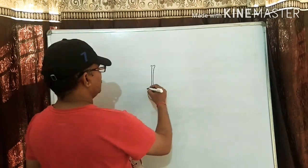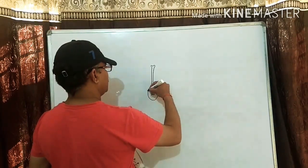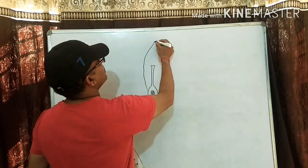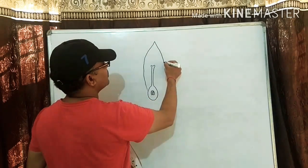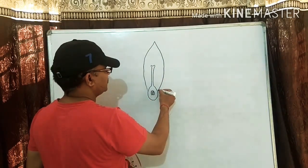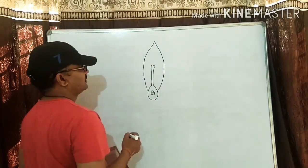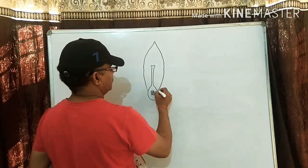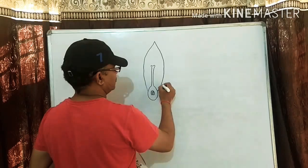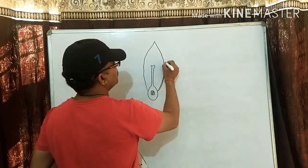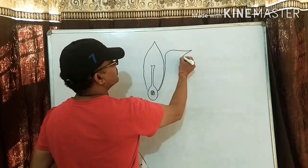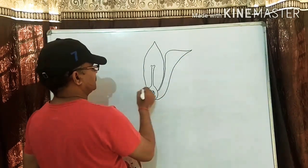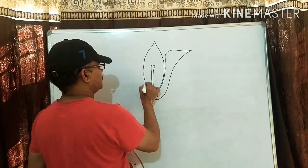Then you make petals. These are the colored parts of the flower. Like this, from here also.